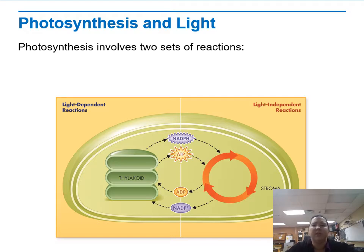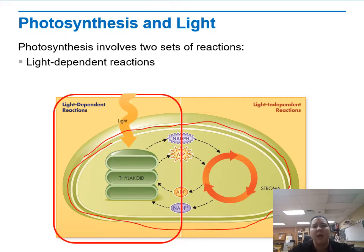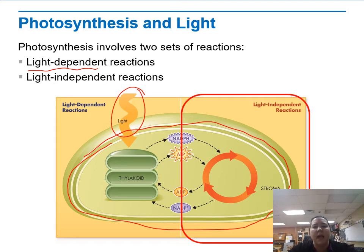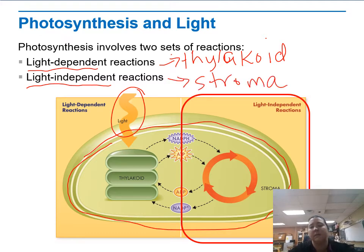In photosynthesis, there are two sets of reactions. Here's a picture of the chloroplast — the thylakoids are inside, and outside the thylakoids is the stroma. The first half are the light-dependent reactions, which need light. The second half are the light-independent reactions, which don't need light. Light-dependent reactions happen in the thylakoid, and light-independent reactions happen in the stroma — the fluid around the thylakoid.